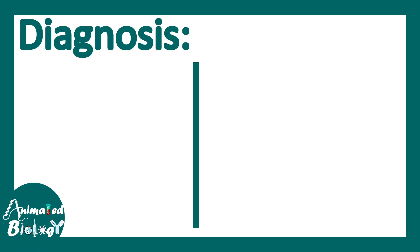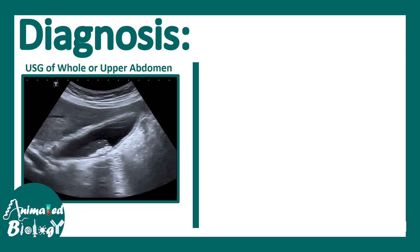We diagnose acute cholecystitis based on radiology. The first choice is an ultrasound of the whole or upper abdomen. On USG, we get to see a thickened gallbladder wall, presence of stone or sand within the gallbladder lumen, and pericholecystic fluid collection. All three of these findings point towards acute cholecystitis.